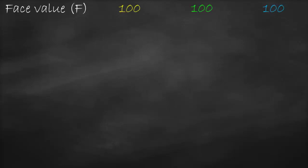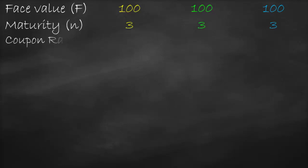Now we'll talk about how to calculate the bond price. We have three scenarios. In all three scenarios, the face value will be the same: 100. Maturity will be the same: three years. The coupon rate will also be the same: 10% in all three scenarios.